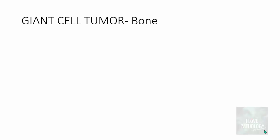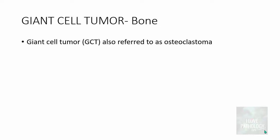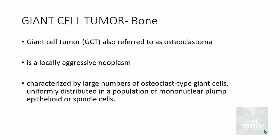When I say Giant cell tumor I am talking about Giant cell tumor of the bone. This is also referred to as osteoclastoma — it was referred to as osteoclastoma, but now it's called Giant cell tumor. This is a locally aggressive neoplasm characterized by large numbers of osteoclast-type Giant cells which are uniformly distributed in a population of mononuclear plump epithelioid or spindle-shaped cells.